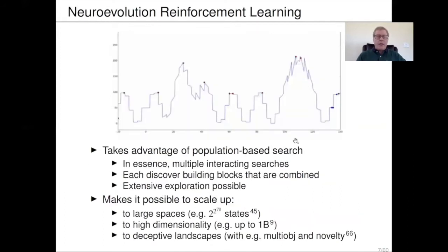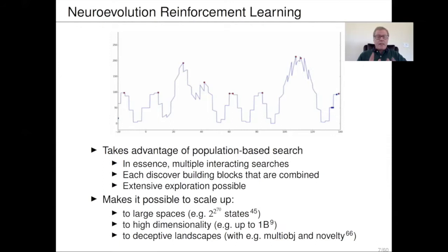This is where neuro-evolution comes in. The main difference from policy search is that we take advantage of populations — it's a population-based search method. Instead of a single individual climbing the nearest hill, we have a population of multiple solutions scattered broadly across the search space, with multiple parallel searches happening at the same time. Each discovers building blocks that are then combined to find something better. The population gives you power that standard reinforcement learning does not have — it allows you to explore more broadly because you can afford to try solutions that are not necessarily good, as they might still find building blocks that combine to give really good solutions.